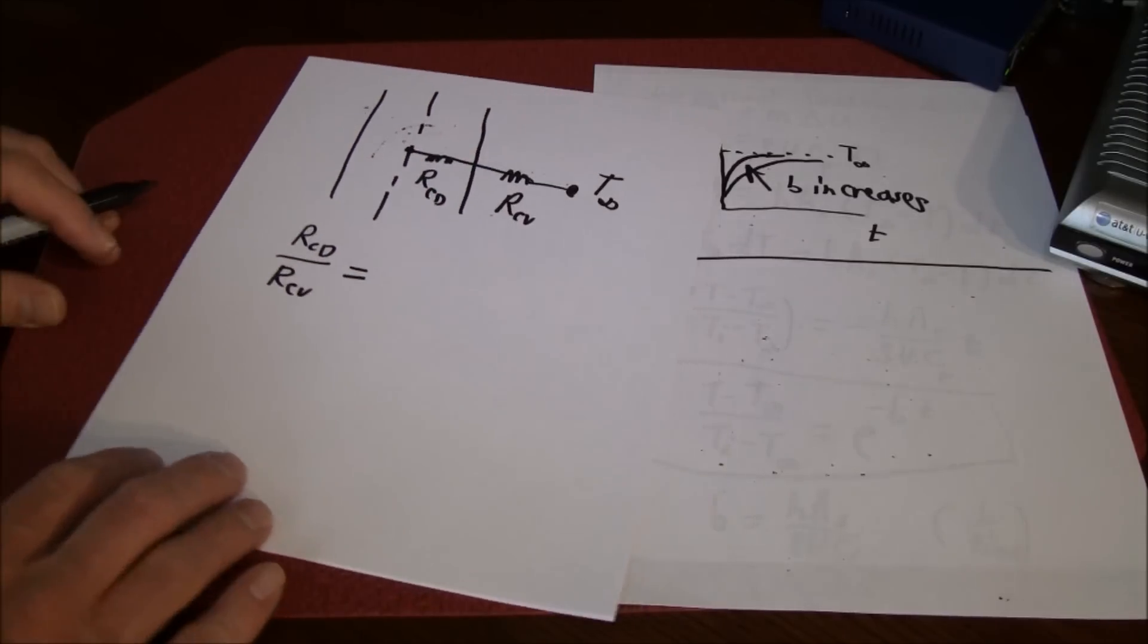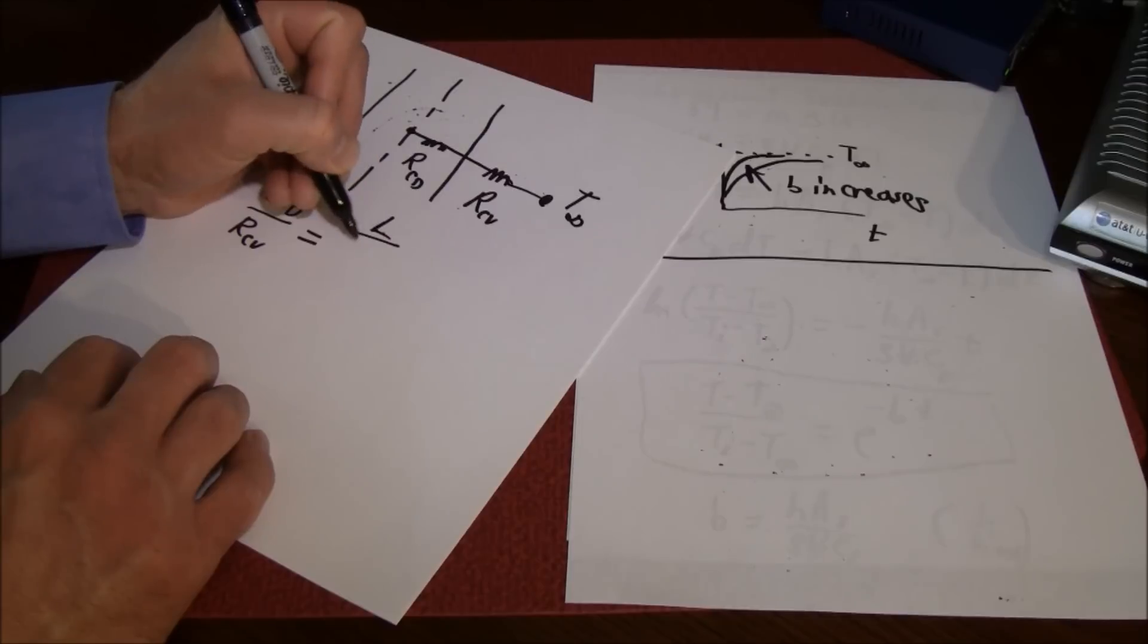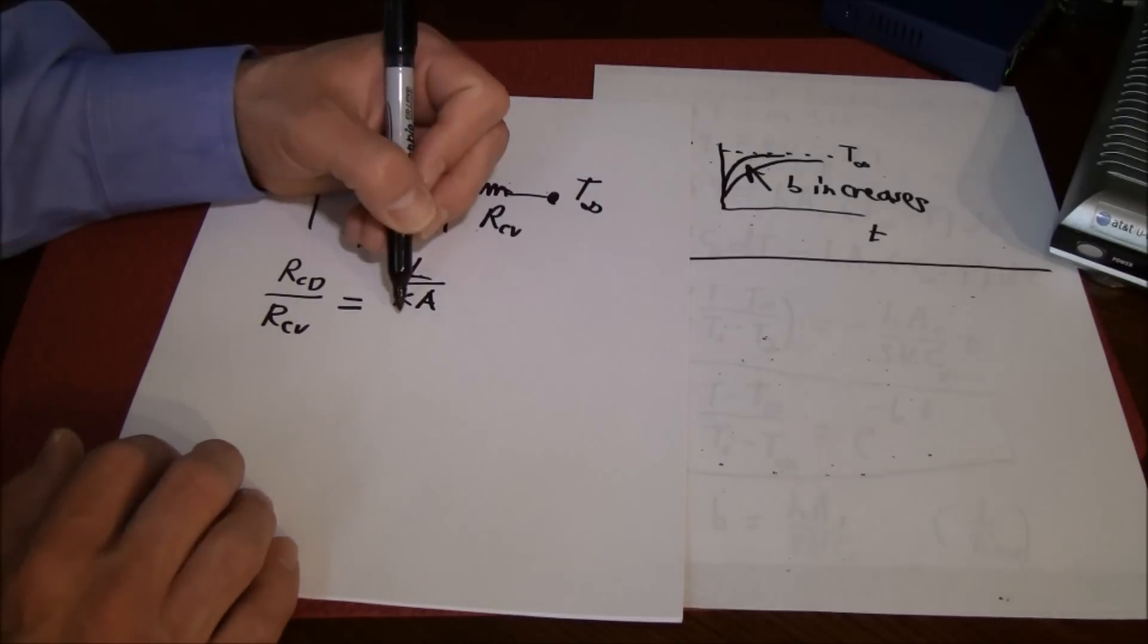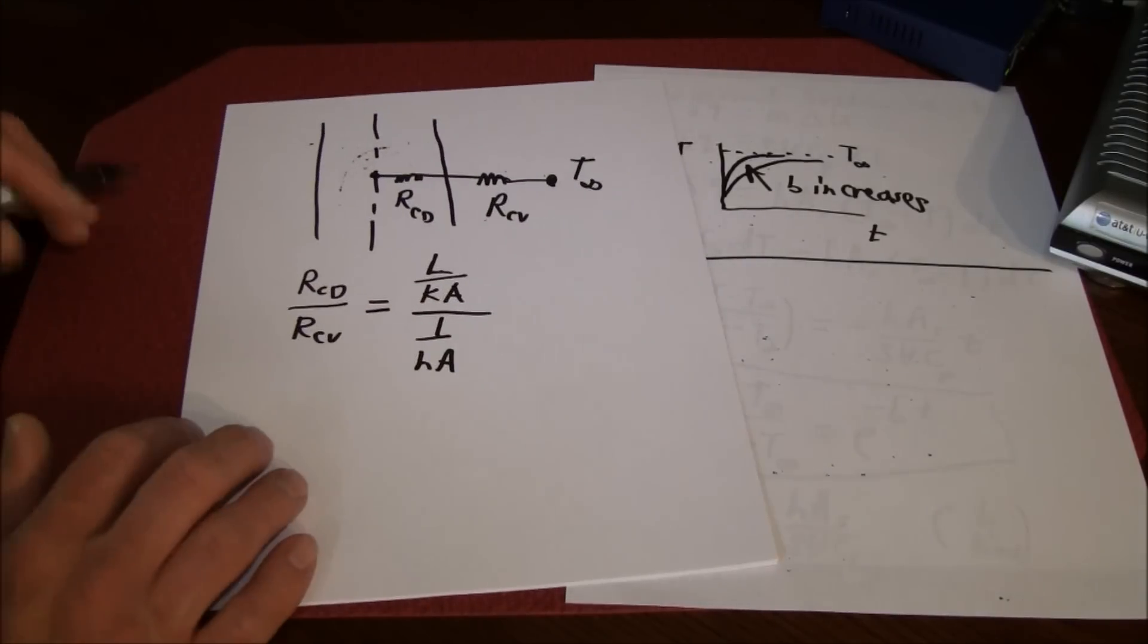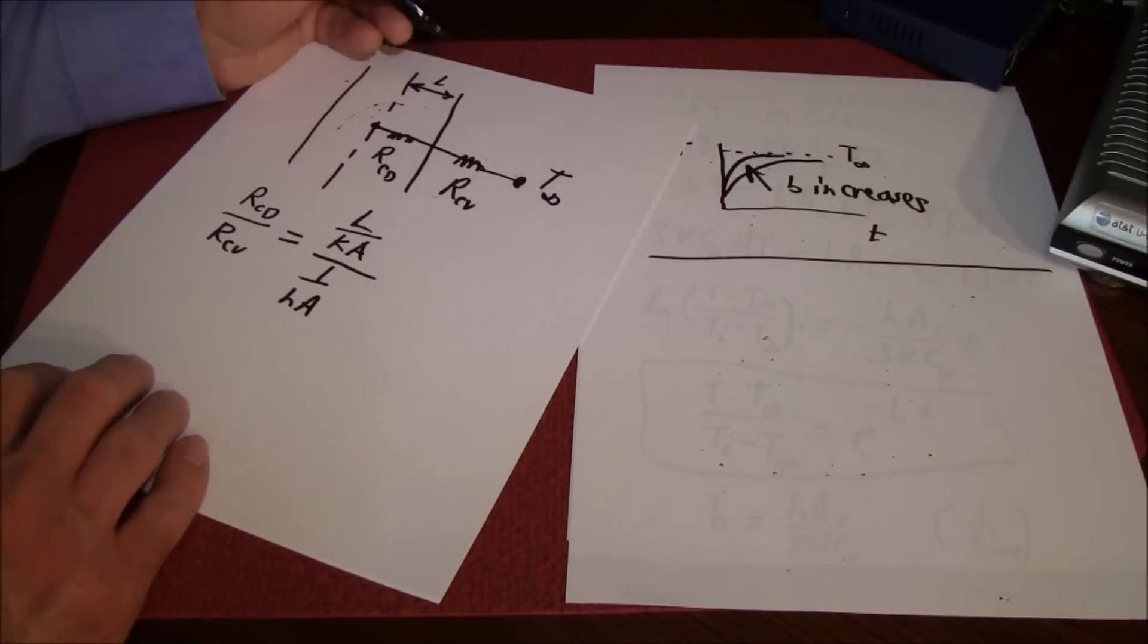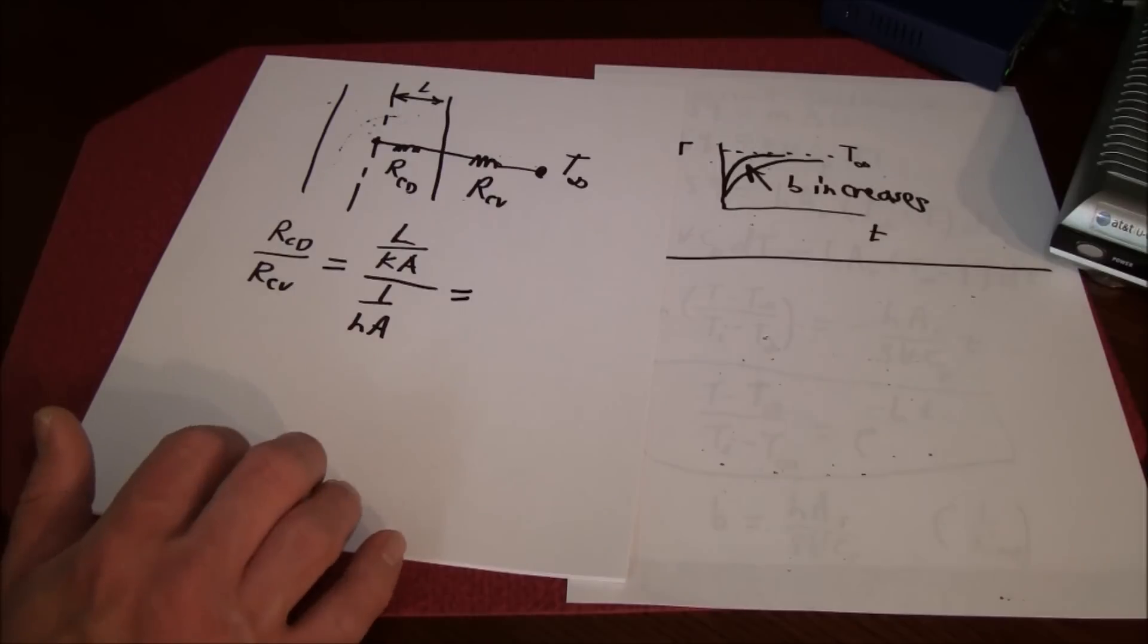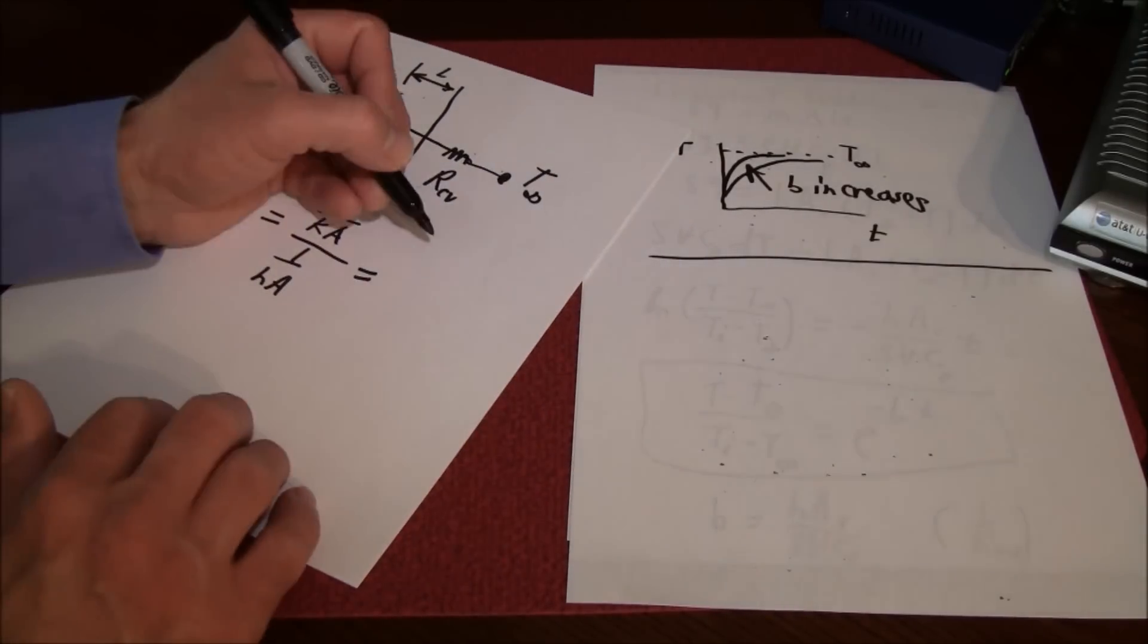The resistance due to conduction, if you recall from previous lectures, was equal to L over k A (the conductivity of the wall) divided by one over h A. We'll call this length here L. If we did some algebra on that and simplified it down, what you would see is that this ratio here is actually equal to L h over k.